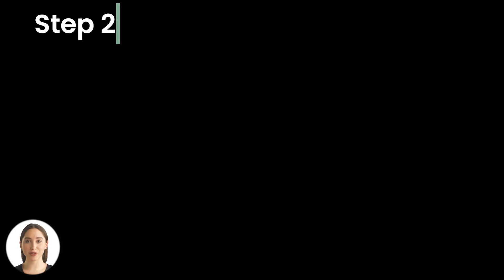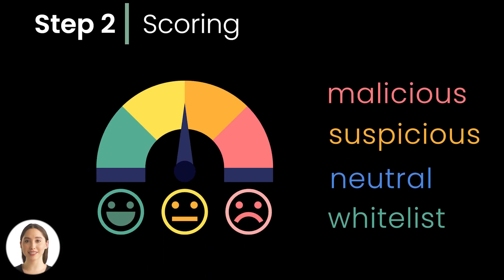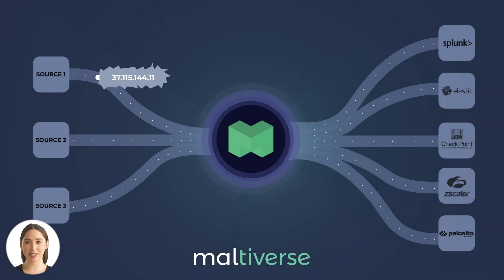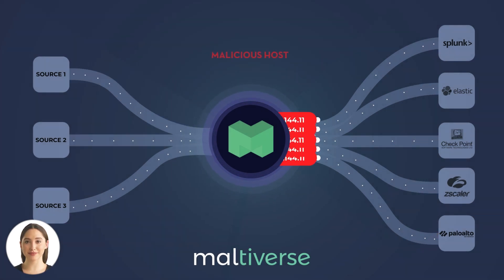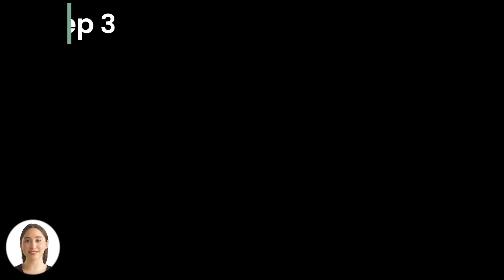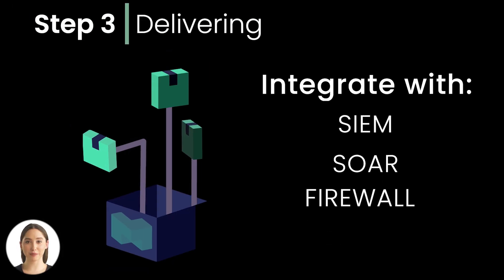Step two: scoring. A scoring algorithm enriches indicators with relevant context information to constantly classify them as whitelisted, neutral, suspicious, or malicious. This is the key to avoiding false positives.